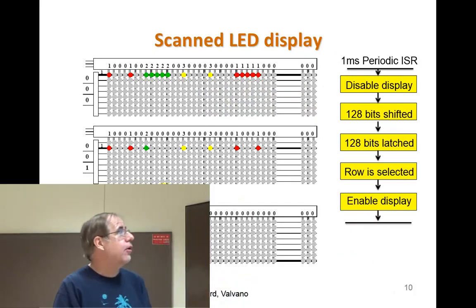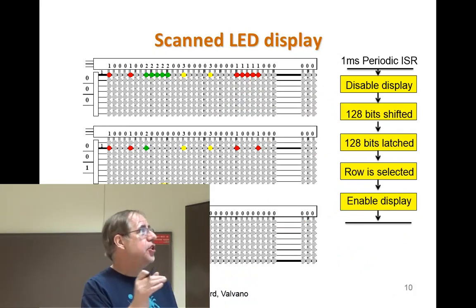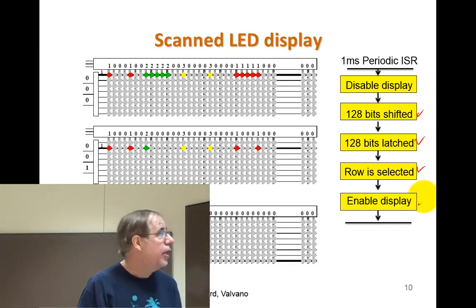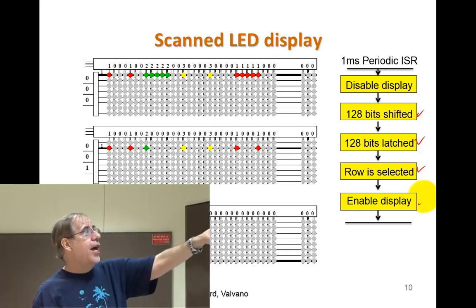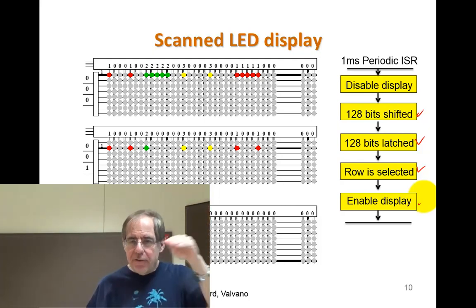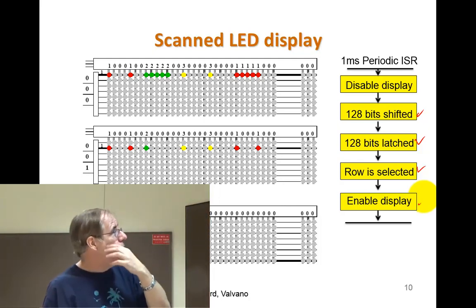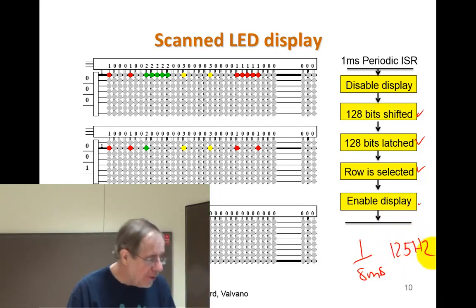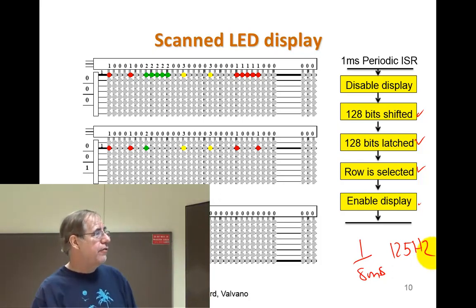All right, the software is pretty straightforward. You turn off the display so it doesn't jitter while you're shifting things around. You shift 128 bits in, you latch them, you select the row, and then you re-enable it. And then you go away, right? So this is going to happen a thousand times per second. And so every millisecond, a different row is driven, which means I get through all the rows in eight milliseconds. And one over eight milliseconds is, what's that? 125 hertz. And so the thing is oscillating at 125 hertz, your eyes can't tell. That's how this thing works.